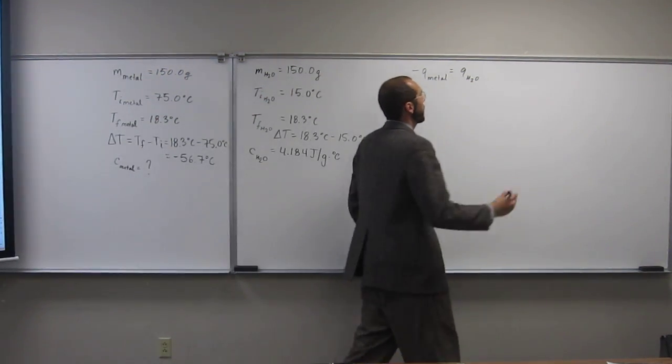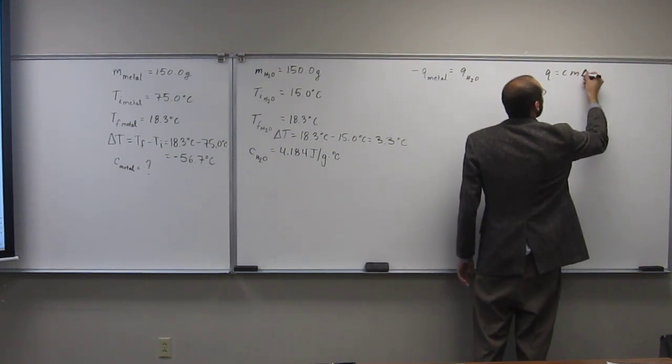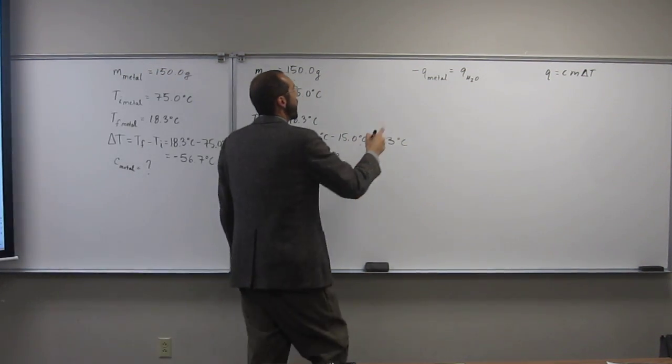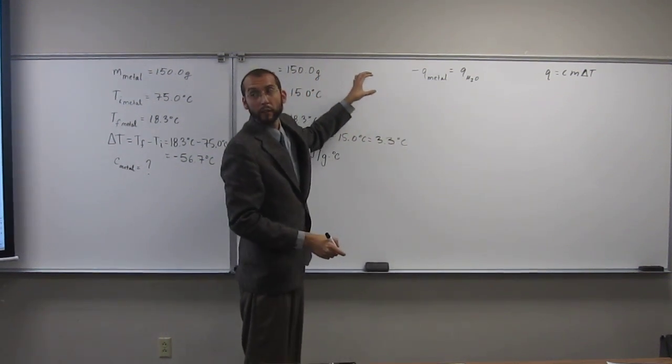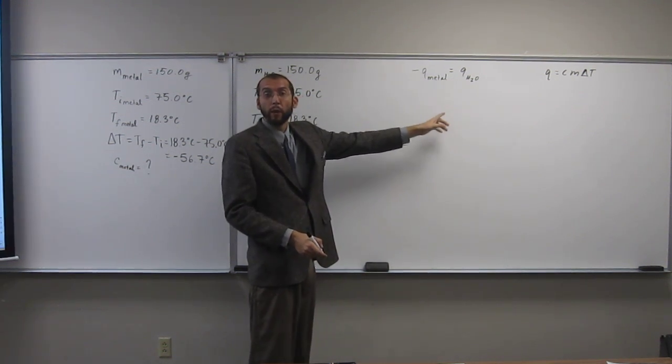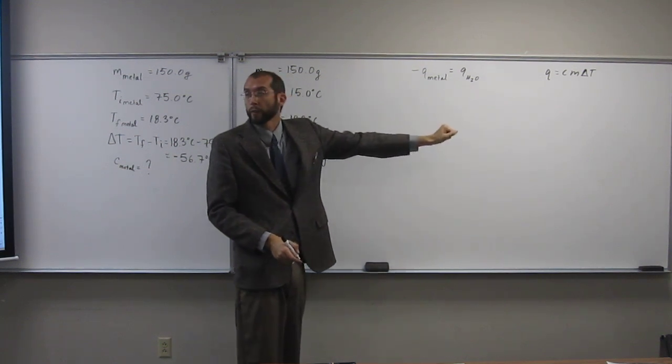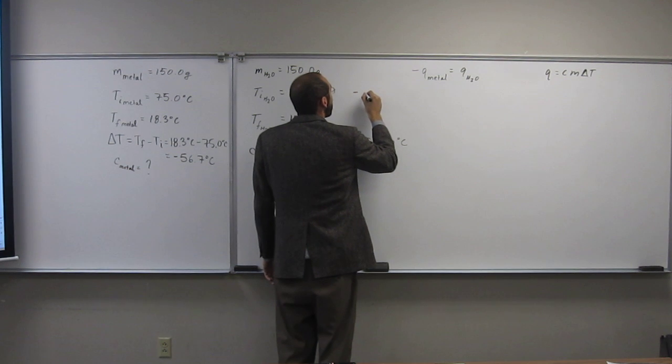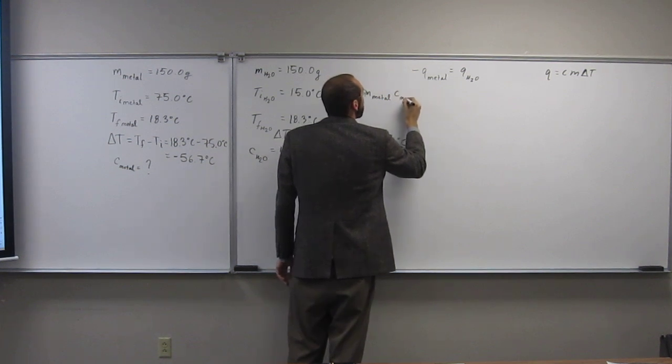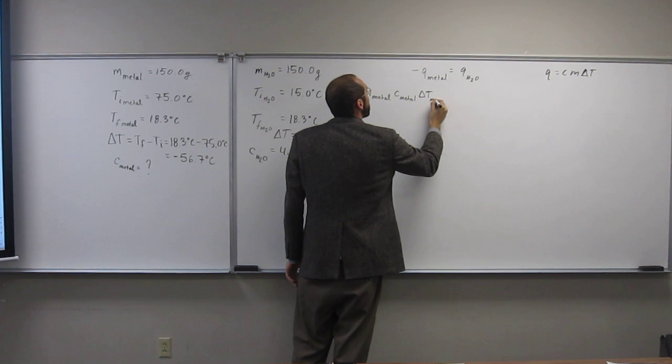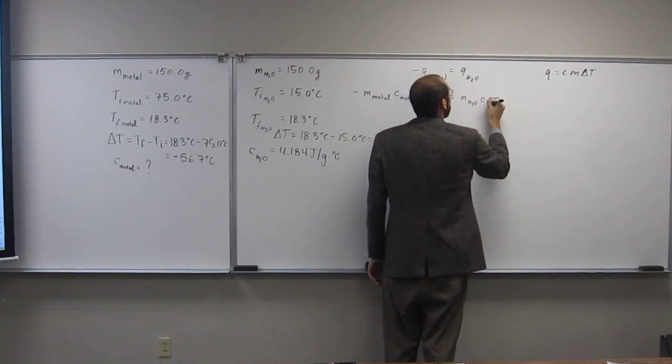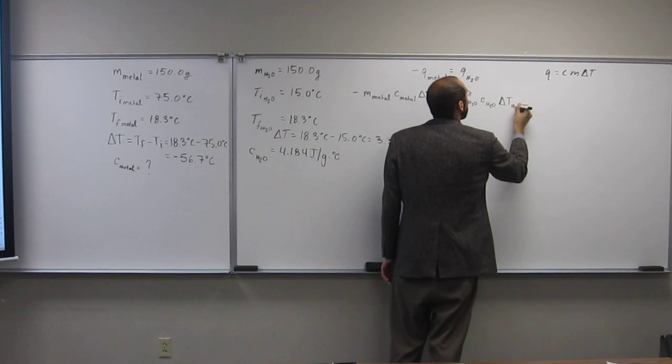So Q, remember, we know Q equals CM delta T, or MC delta T or however you like to put those things together. So on this side we have C of the metal times M of the metal times delta T of the metal, right, equals, that's the negative, times the C of water times delta T of water times M of water. Okay? So let's just put that together. So we're going to have the negative M of the metal times the C of the metal times the delta T of the metal. And that equals M of the water times the C of the water times the delta T of the water.